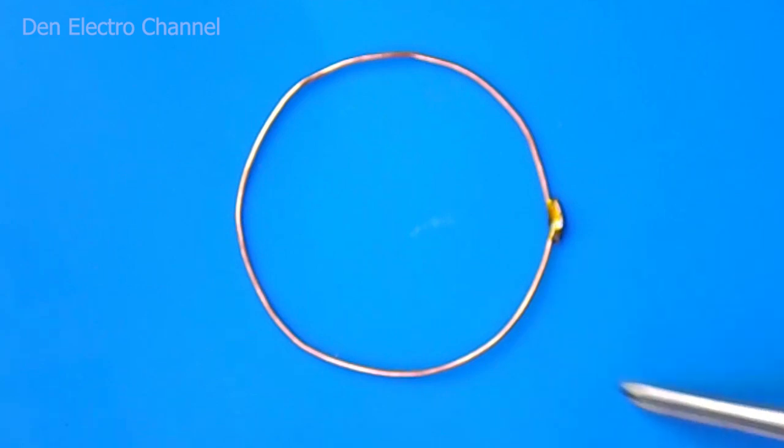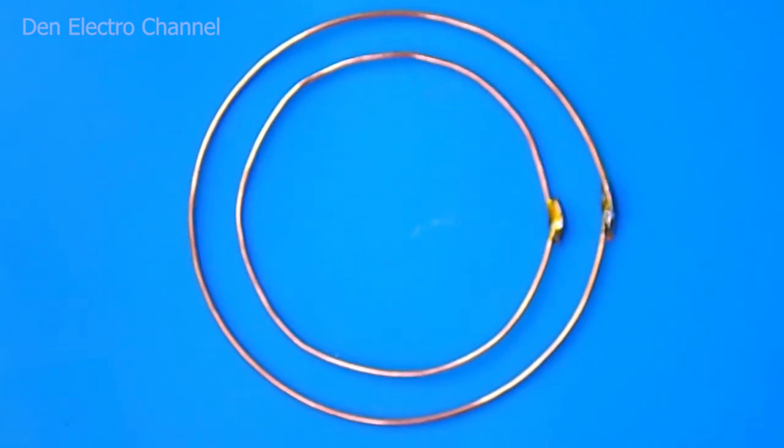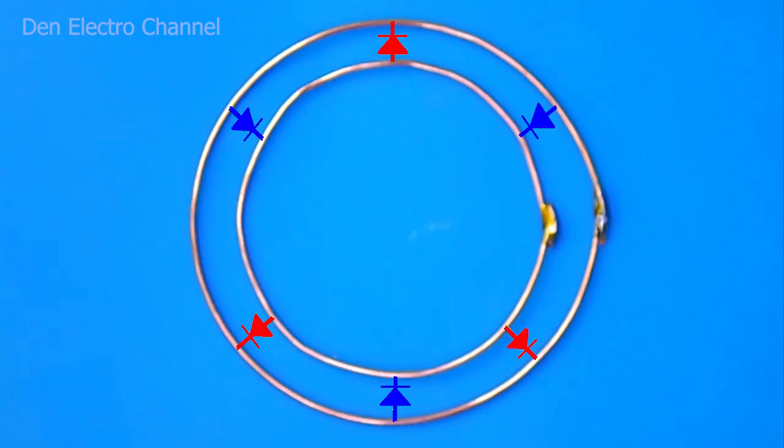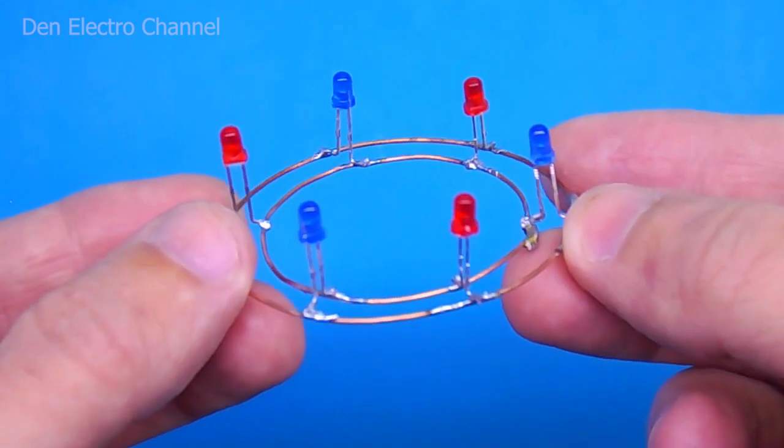Then from the copper wire you need to make 2 rings. The diameter of the wire in my case is about half a millimeter. Solder the LEDs onto the rings. Blue on one side and red on the other. LEDs of the same color are at an angle of 120 degrees to each other. After soldering it should look something like this.